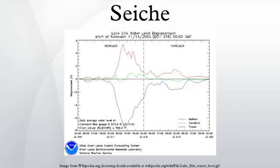The key requirement for formation of a seiche is that the body of water is at least partially bounded, allowing the formation of the standing wave. The term was promoted by the Swiss hydrologist François Alphonse Forel in 1890, who was the first to make scientific observations of the effect in Lake Geneva, Switzerland. The word originates in a Swiss-French dialect word that means to sway back and forth, which had apparently long been used in the region to describe oscillations in alpine lakes.